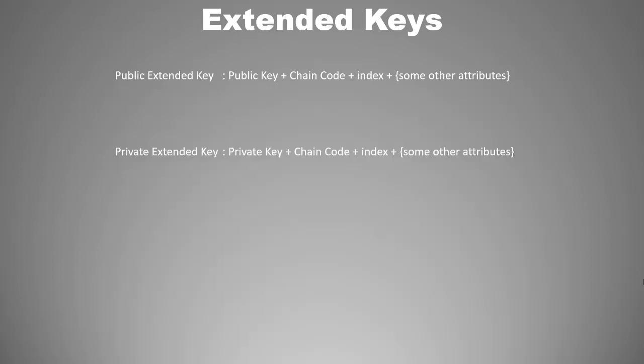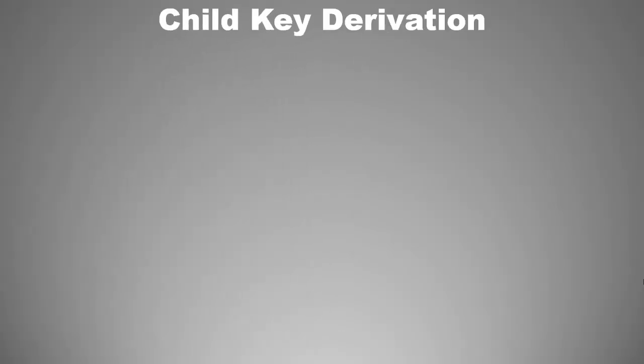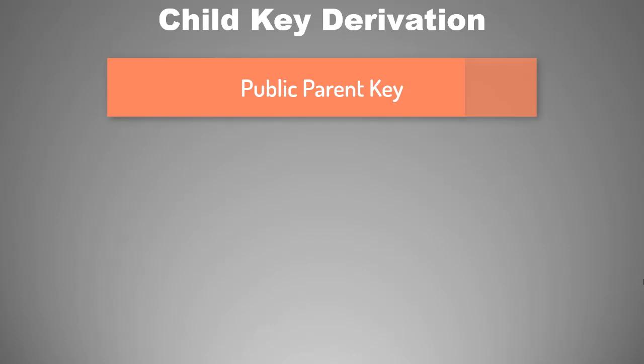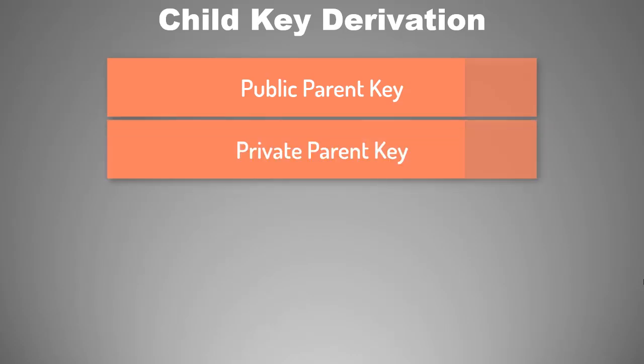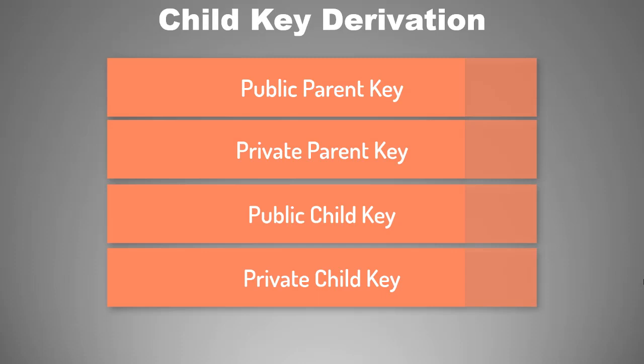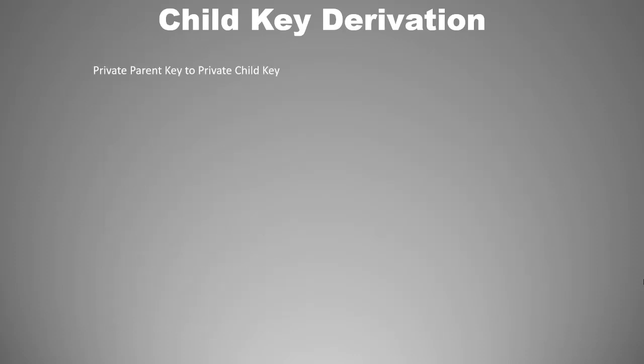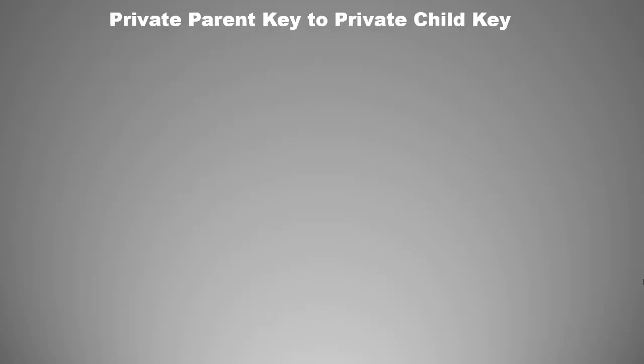Since an extended key can be public or private, we can have public or private parent keys and public or private child keys. Putting this permutation and combination together, you can think of four types of derivation: private parent to private child, public parent to public child, private parent to public child, and public parent to private child. However, this fourth combination is not possible because you can never derive a private key from a public key. So we have three valid types of child key derivation.